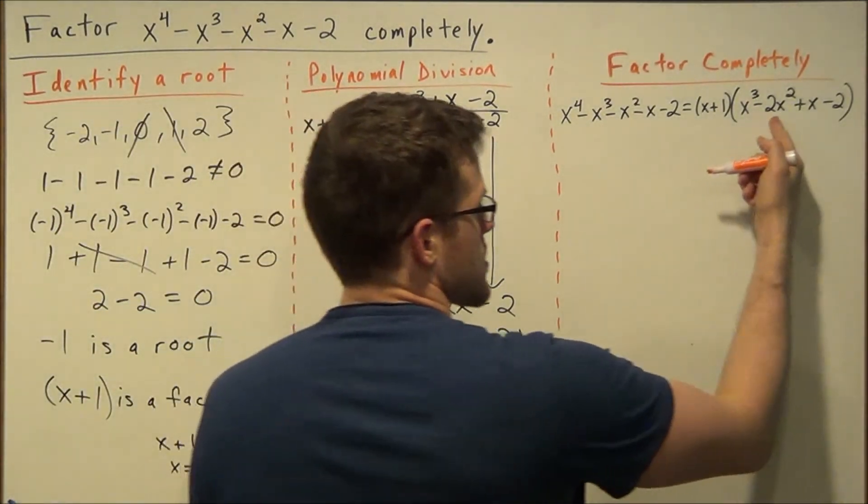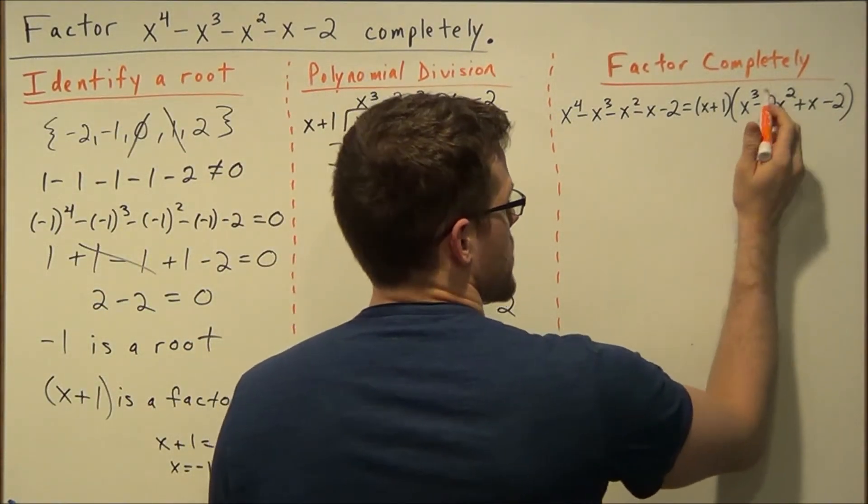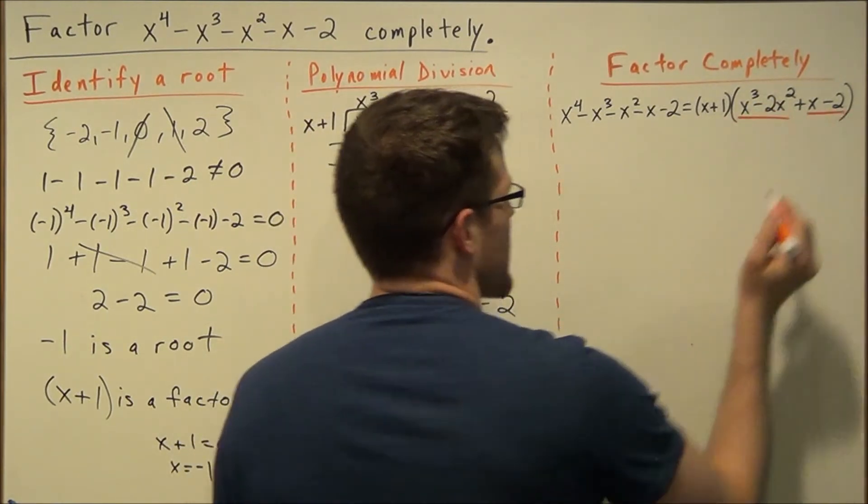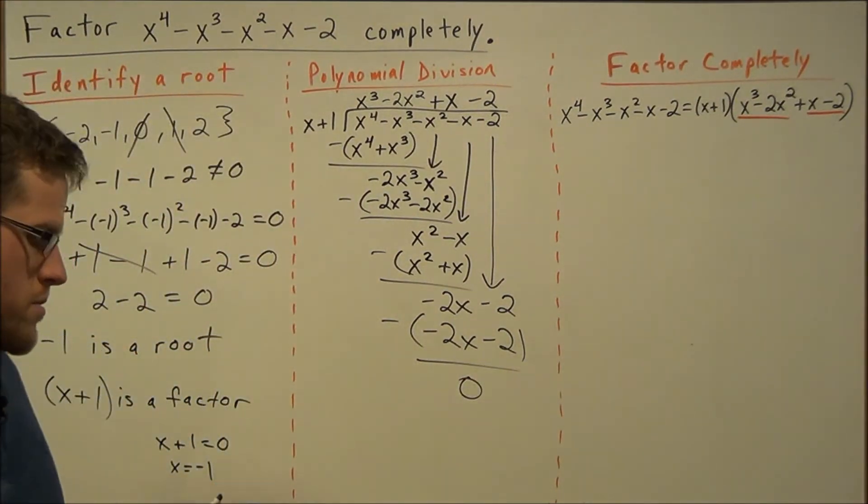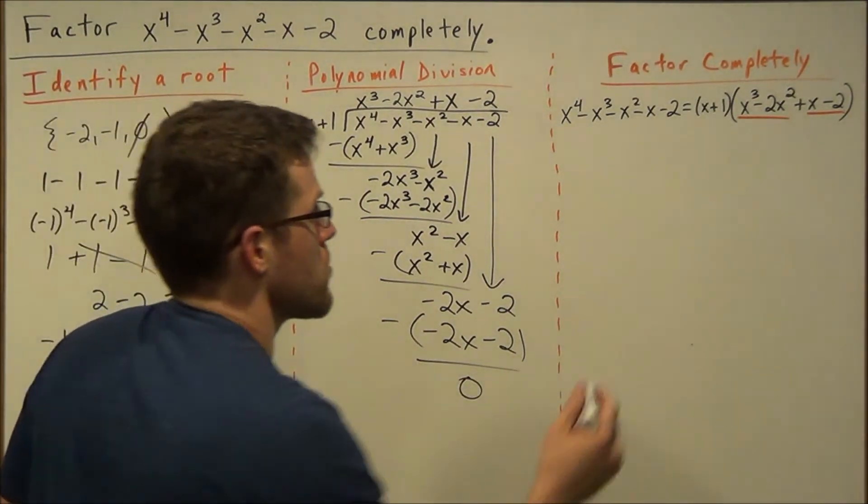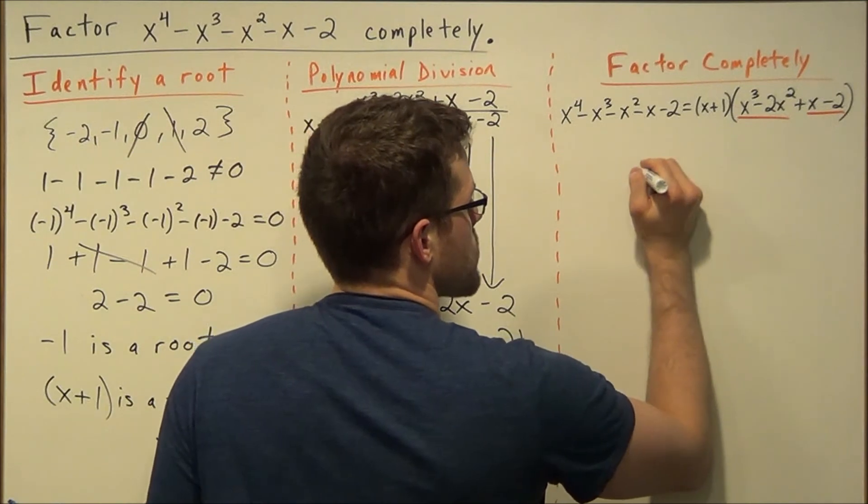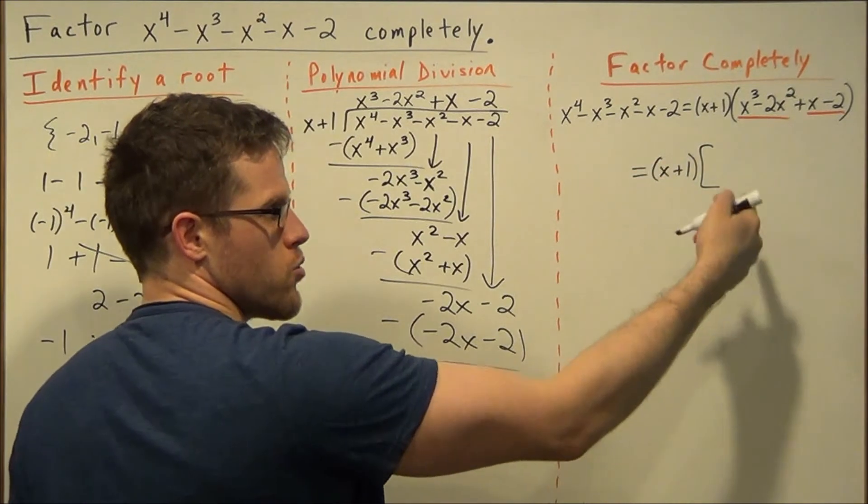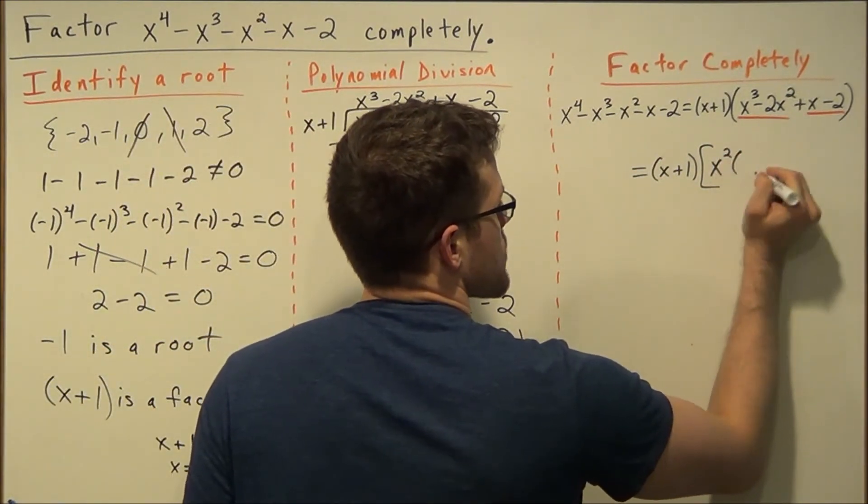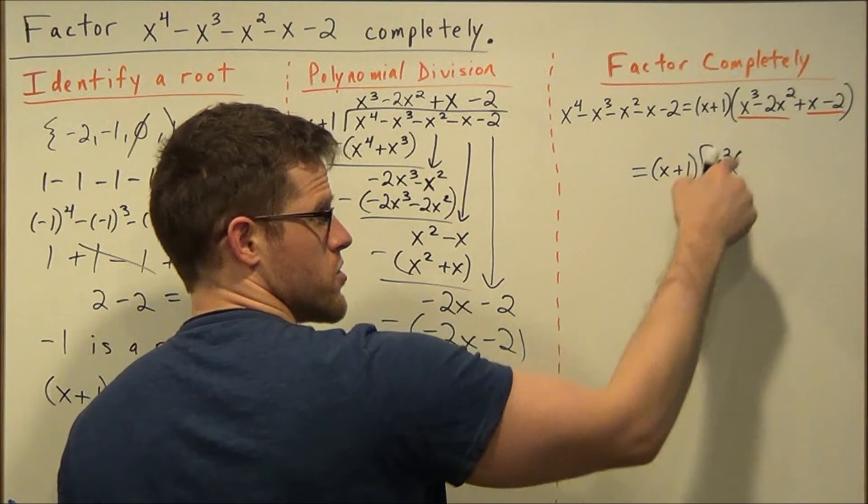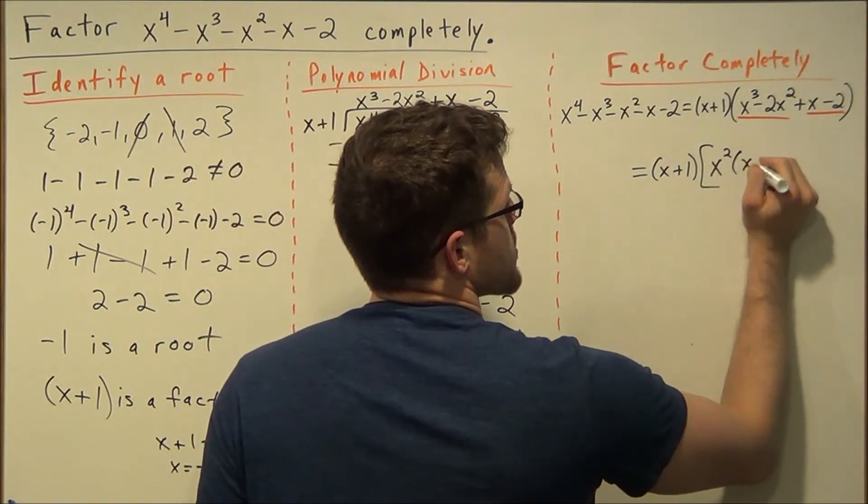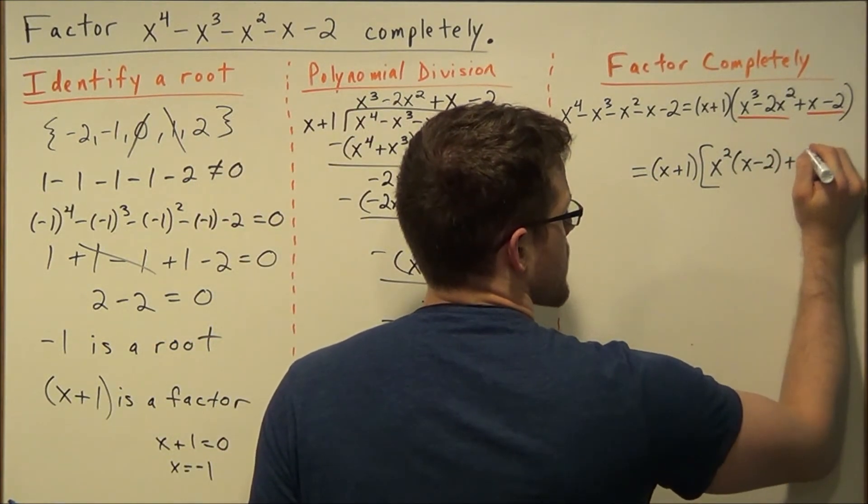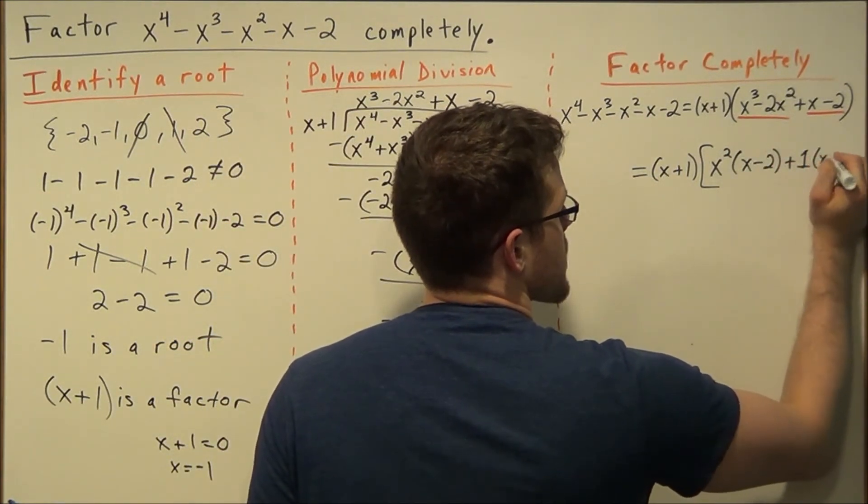So what we need to do is this last polynomial here, the second part, we're going to find the greatest common factor of the first two terms and the last two terms, and we're going to factor it out and finish this by grouping. So for this last part here, we have equals x plus 1, we'll put brackets because we're going to have many more parentheses here. And we have x squared for the first two terms, that's our GCF, x squared, and then we have x minus 2 left. And then the greatest common factor of x and negative 2 is 1, so we have 1 times x minus 2.